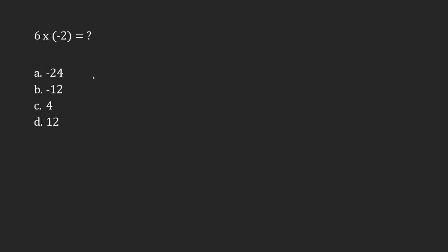In this case, we're performing multiplication between a positive—because if there's no sign, it's a positive—between a positive 6 and a negative 2. When it comes to multiplication or division, the rule is as follows.